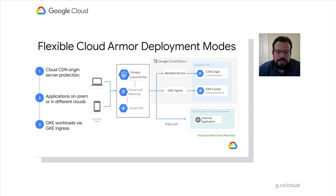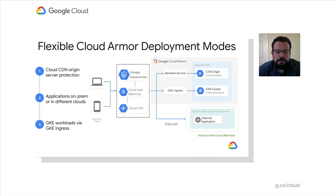Enterprises often need to enforce a consistent set of security controls for their applications no matter where they are deployed, whether they are migrating to GCP or running in permanently hybrid configurations. We recently launched support for internet network endpoint groups that allows customers to leverage all of Google's edge infrastructure, including cloud load balancers, Cloud CDN, and Cloud Armor to protect their website or application no matter where they are hosted. Now Google can help protect your applications, whether from DDoS attacks or other common web attacks, without having to deploy the application directly on GCP.